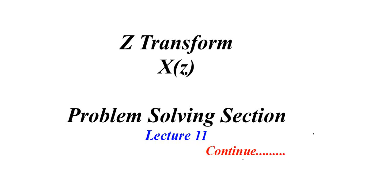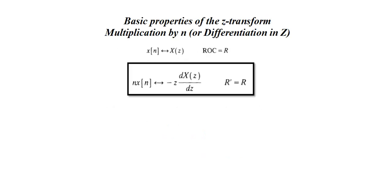In this lecture we will mainly focus on the Z-transform property known as multiplication by n, or commonly known as differentiation in Z-transform. When you compare other properties, this property is very important from an exam point of view and you can expect many questions from this area. Do not skip this particular property when you are practicing problems.